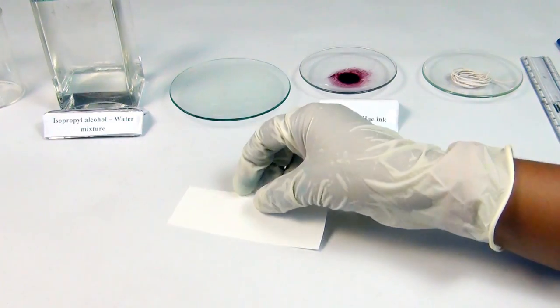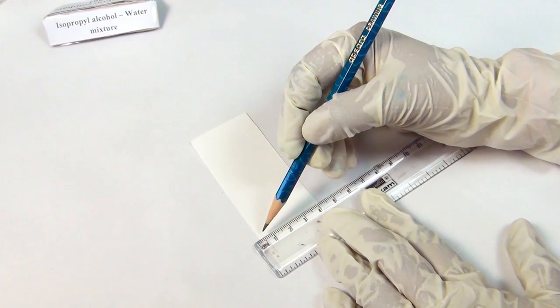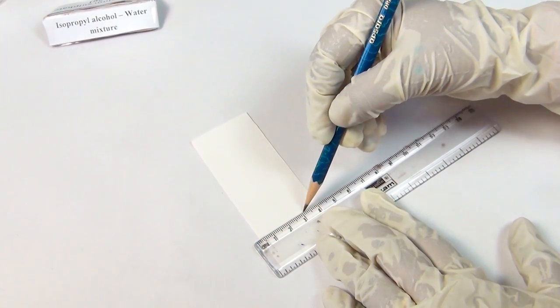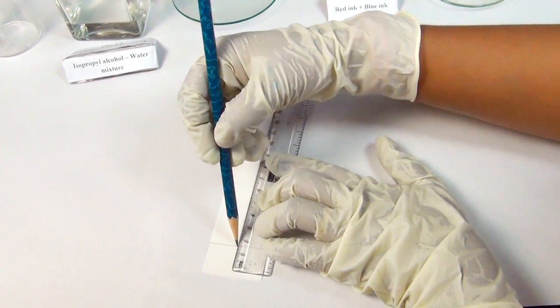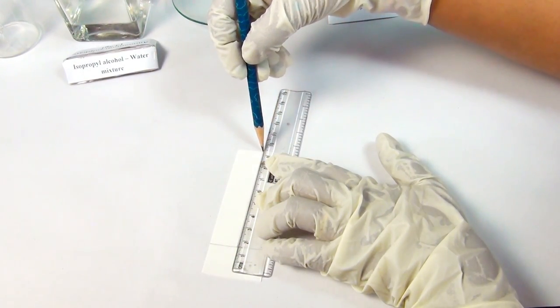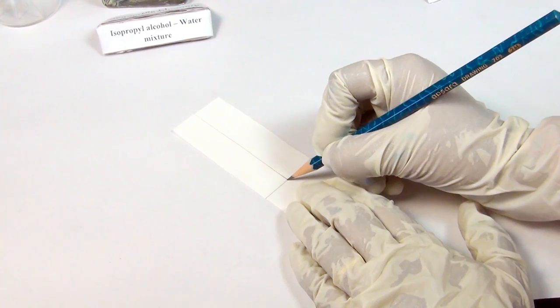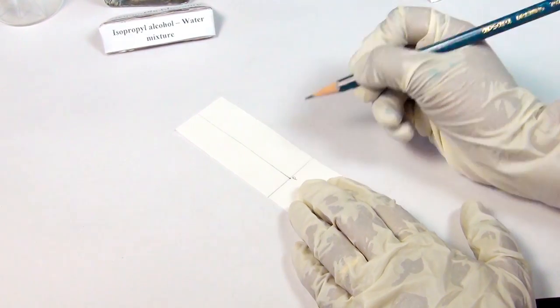Procedure: Take a Whatman filter paper strip and draw a line with a pencil about 2 cm from one end. Draw another line lengthwise from the centre of the paper. Name the point at which the two lines intersect as P.